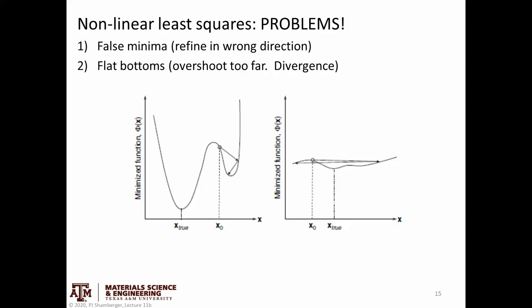There are a couple of general problems you might encounter when doing a refinement, since this is a nonlinear function. The two biggest are false minima — if you start in the wrong place or refine things in the wrong order, you can get trapped in these false minima and have to back up or choose a different starting position — and parameter explosion, where parameters overshoot and get into non-physically real values, causing the fit to rapidly degrade.